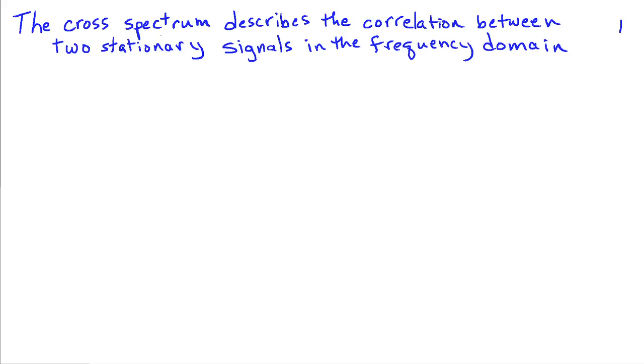The power spectral density describes the behavior of a single random process in the frequency domain and is the discrete time Fourier transform of the autocorrelation sequence. The cross spectrum and coherence are tools for describing the relationship between different signals in the frequency domain, and they're based on the cross correlation between two signals. We begin with the cross spectrum or the cross spectral density, which describes the correlation between two stationary signals in the frequency domain.